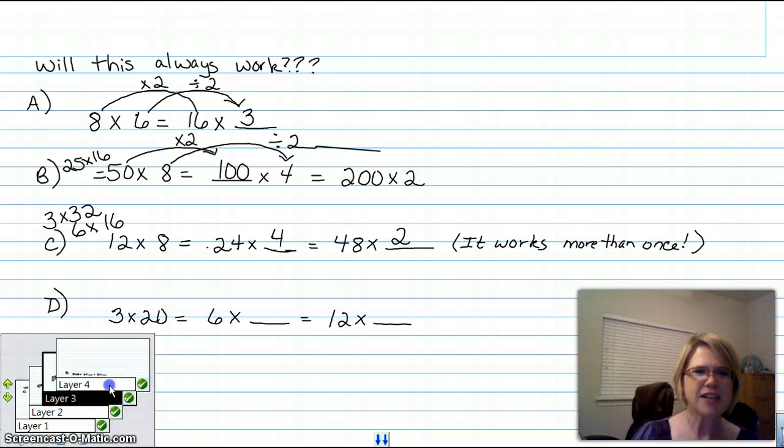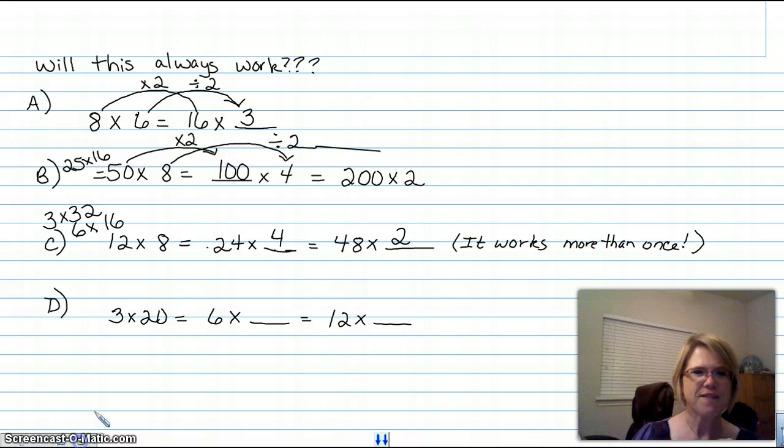Let's see what we get for D. 3 times 20. Hopefully, we all know it's 60, right? So what if I want this missing factor? What did I do to go from 3 to 6? Hopefully, you said doubled it. So if I doubled that factor, what do I have to do with this factor? Take half of it. So how did I go from 6 to 12? I doubled it. So if I doubled that one, what do I have to do with this one? I have to take half of it, right? Now, can I double 12? I can't take half of 5 though, can I? So no, I probably need to stop there.